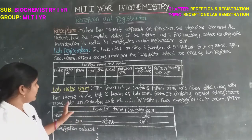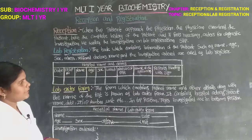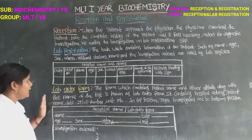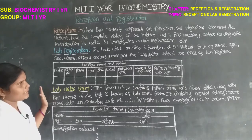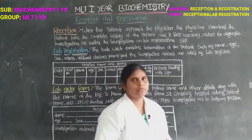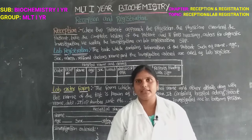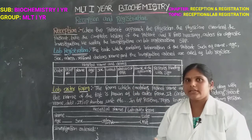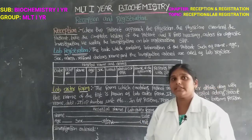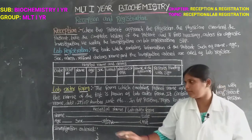Next is the lab order form. The form which contains the patient name and other details along with the name of the test is known as the lab order form. It contains hospital address, patient name, date, IP number, and unit in the top position. Test investigations are listed in the bottom position.